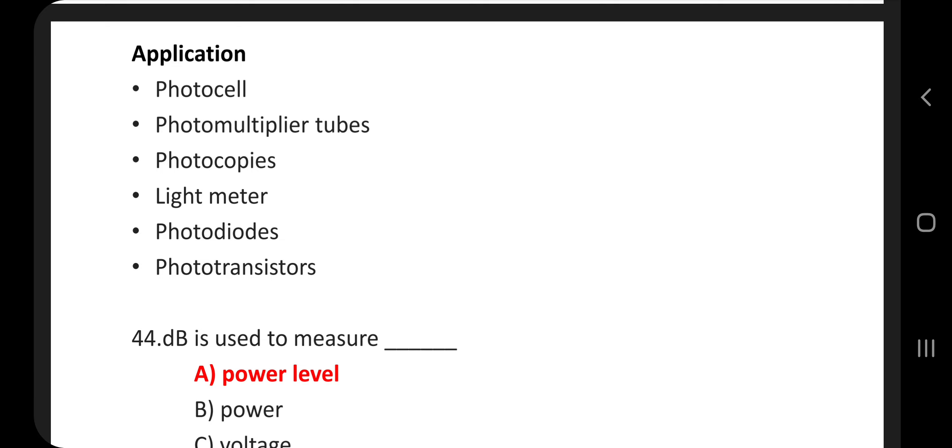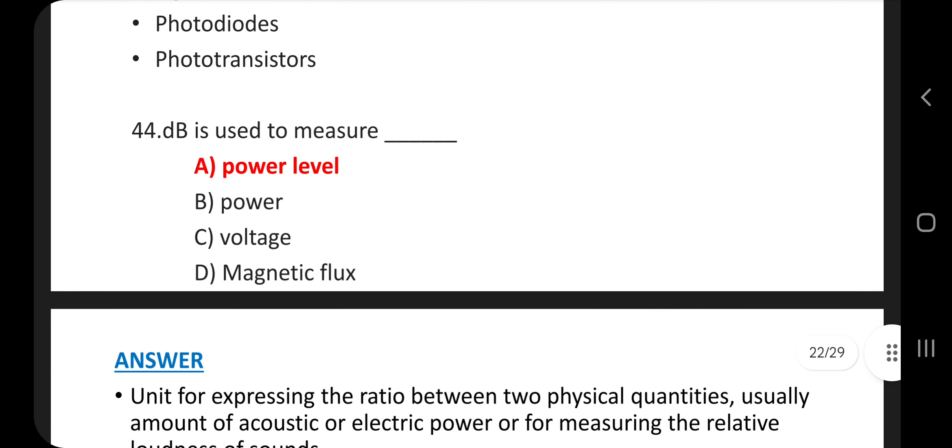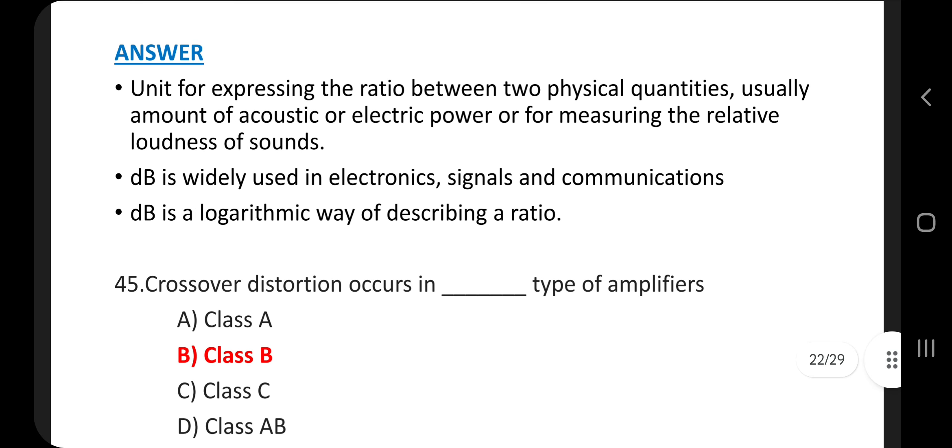Question number 44. dB is used to measure, answer A, power level. Unit for expressing the ratio between two physical quantities, usually amount of acoustic or electric power, or for measuring the relative loudness of sounds. dB is widely used in electronic signals and communication. dB is a logarithmic way of describing a ratio.